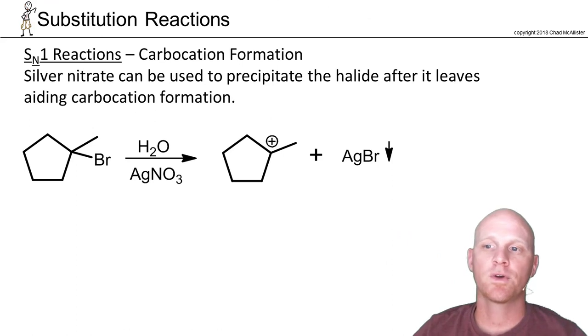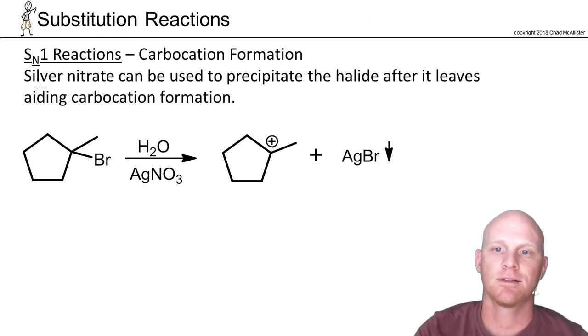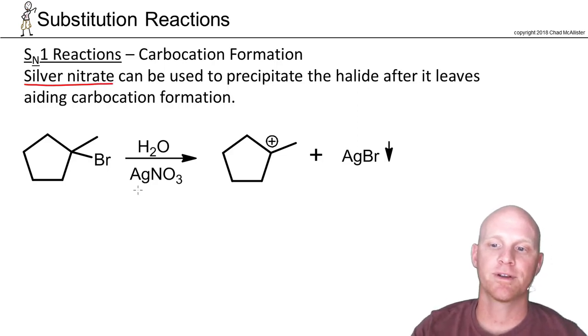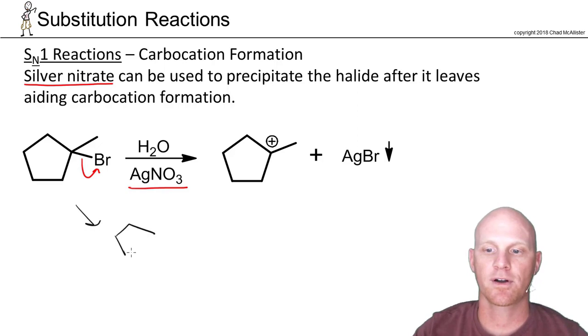SN1 reactions are all about carbocation formation. Sometimes we use silver nitrate to help that carbocation form. That's AgNO3. In the first step of this reaction, the bromine would be breaking off and leaving. The leaving group leaves, resulting in our carbocation and a bromide ion.